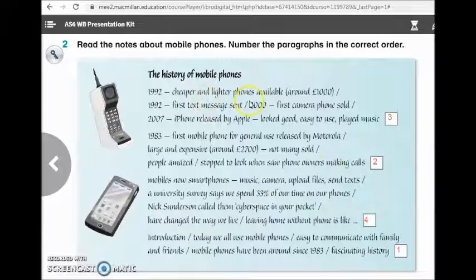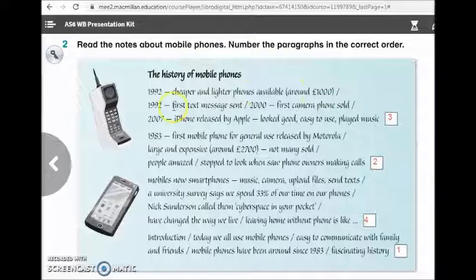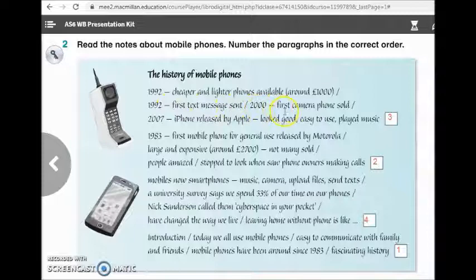1992. Cheaper and lighter phones available. Around 1,000 pounds. 1992, first text message sent. 2000, first camera phone sold. And 2007, iPhone released by Apple. Looked good. Easy to use. Played music. And the last paragraph.